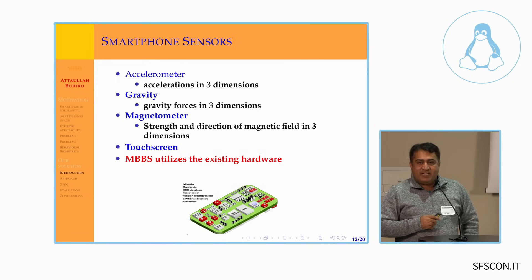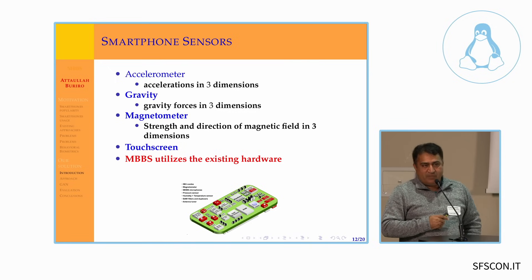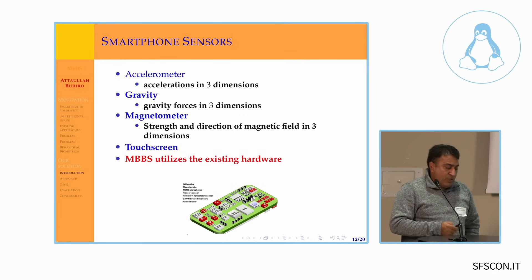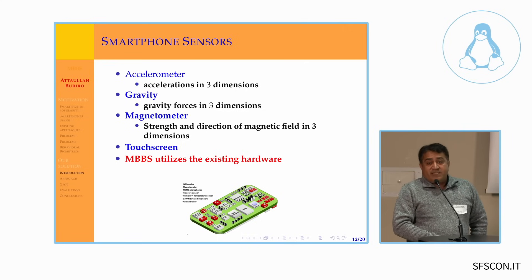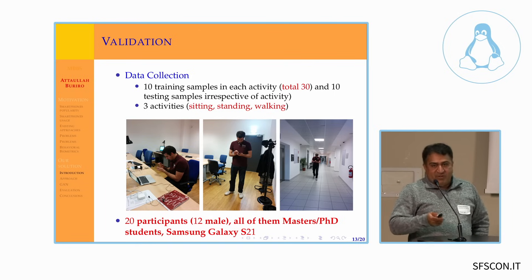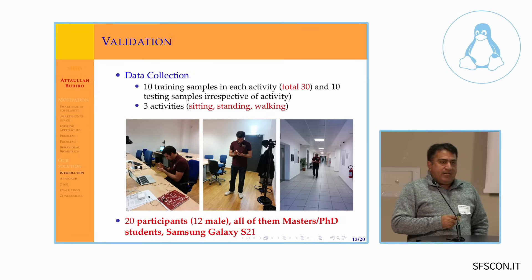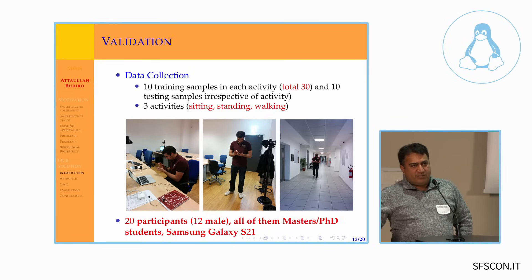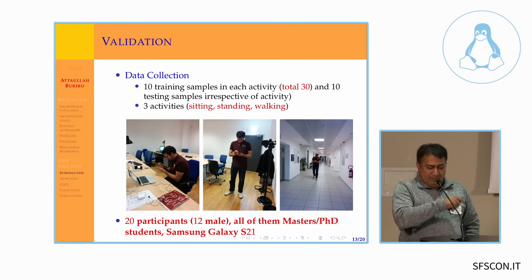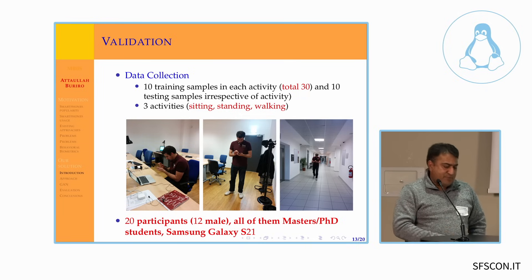Existing hardware is sufficient — I don't require any additional hardware. Built-in sensors like accelerometer, gyroscope, and magnetometer are sufficient, and the touch screen is sufficient as well. We validated this research using a study involving real users with three different strategies — three different body postures: sitting, standing, and walking. 20 participants took part in this experiment, conducted on the Samsung Galaxy S21.